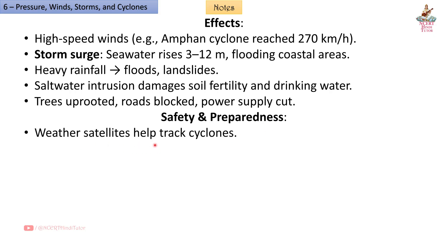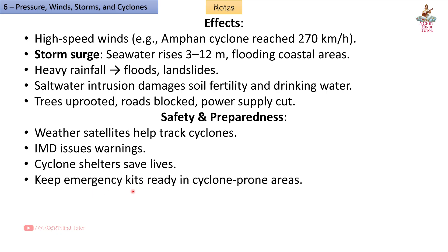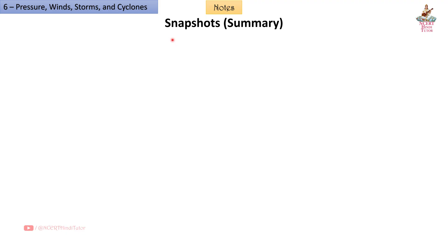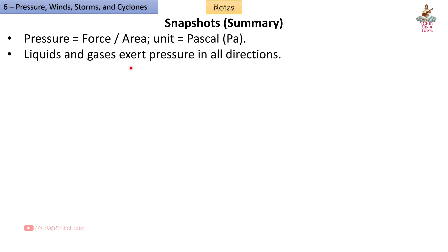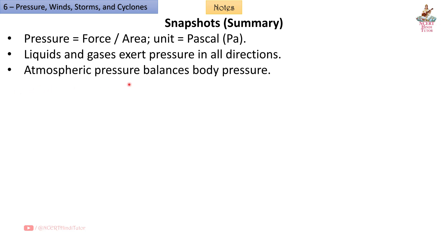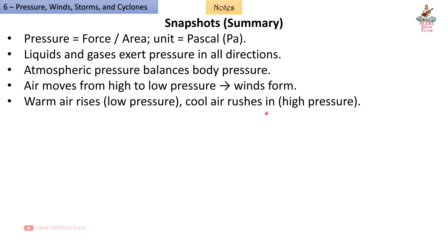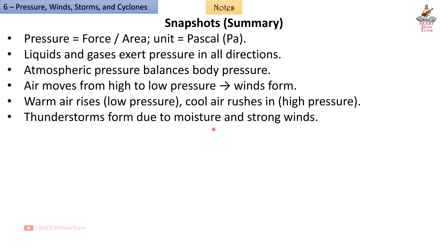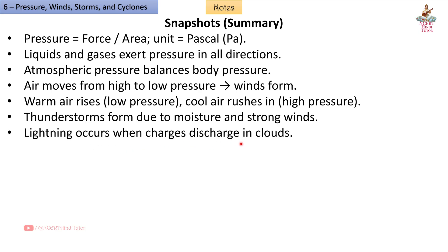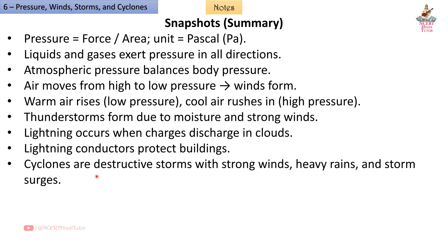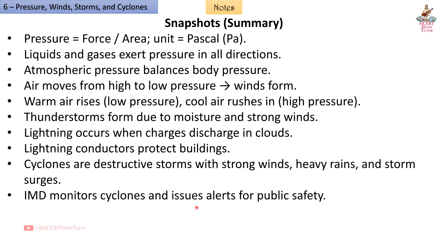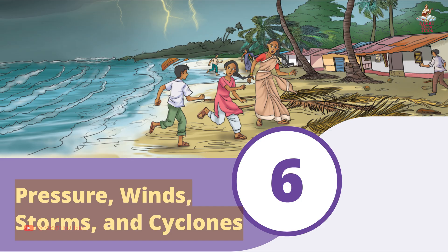Safety and preparedness: Weather satellites help track cyclones. The IMD issues warnings and cyclone shelters save lives. Keep emergency kits ready in cyclone-prone areas. Summary: Pressure equals force divided by area, unit is Pascal (Pa). Liquids and gases exert pressure in all directions. Atmospheric pressure balances body pressure. Air moves from high to low pressure, forming winds. Thunderstorms form due to moisture and strong winds. Lightning occurs when charges discharge in clouds. Lightning conductors protect buildings. Cyclones are destructive storms with strong winds, heavy rains, and storm surges. IMD monitors cyclones and issues alerts for public safety.